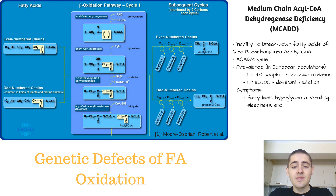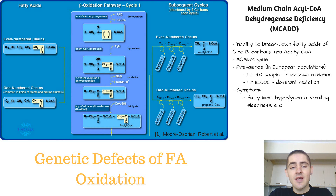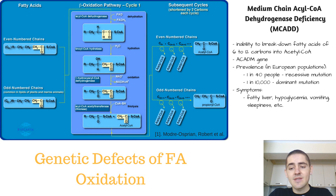One of the ways to diagnose MCADD is by looking at the patterns of organic acids in urine — more specifically, looking for high levels of 6 to 10 carbon dicarboxylic acids and lower levels of ketones.